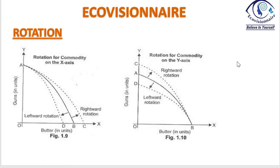Lastly, we should understand the difference between rotation and shift. If we are producing two goods — say guns and butter — and only butter technology improves, guns are unaffected. So the curve rotates: we move from point B to C on the butter axis, keeping guns constant. In the second case, if only guns technology improves, we move from A to C keeping butter constant — again a rotation. When one good's production changes, we call it rotation. When the entire economy's potential improves, the whole curve shifts — that is a shift. Rightward shows increase and leftward shows decrease.